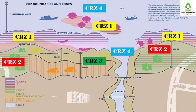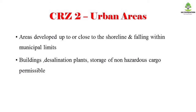Next is CRZ2 areas. You can see the High Tide Line and the area around 500 meters. CRZ2 area is an urban area — it is the shoreline within a municipal limit. The domain includes buildings, desalination plants, and non-hazardous cargoes in this area.